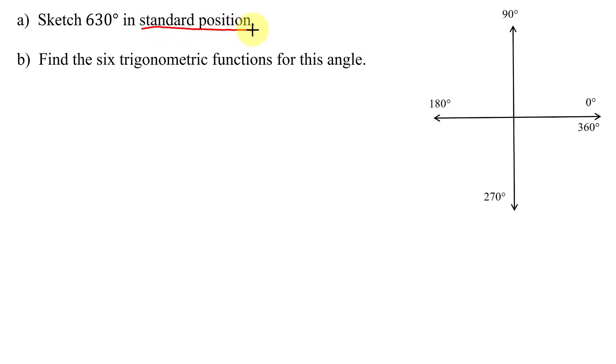So reviewing standard position means the vertex is at the origin. The initial side lies along the positive x-axis. My angle is positive, so I'm going to rotate in a counterclockwise direction.